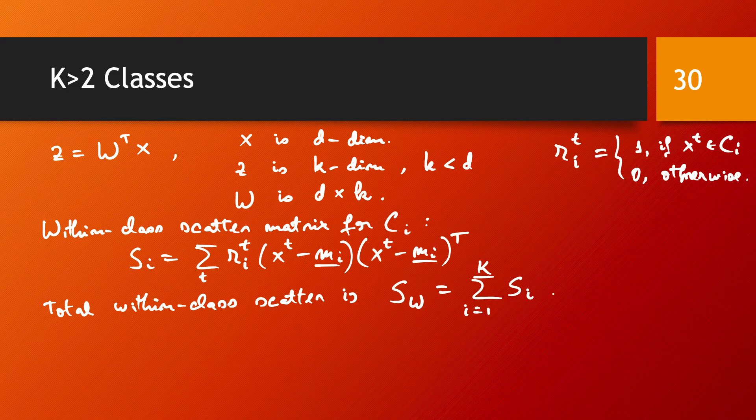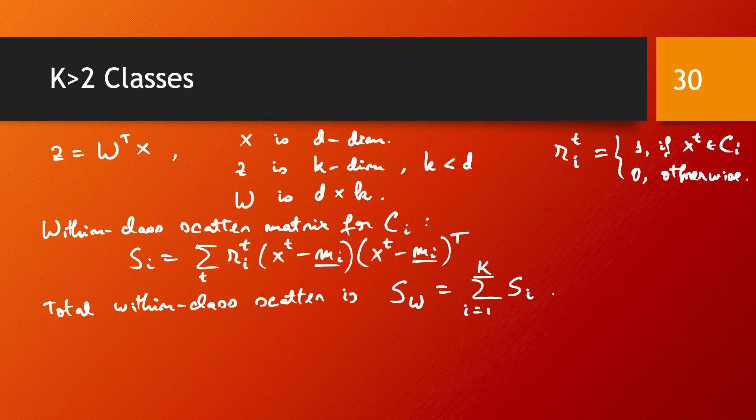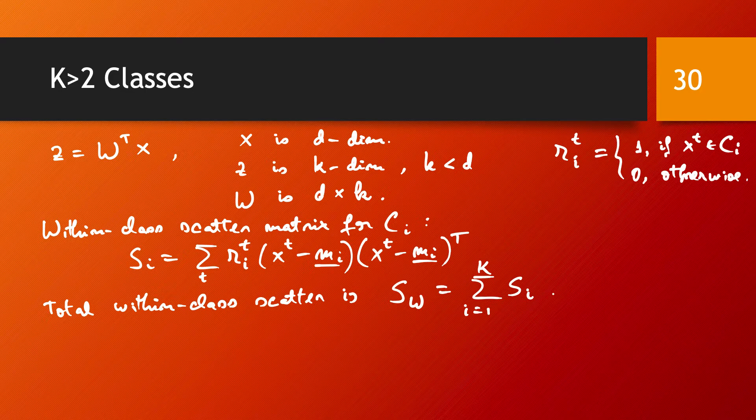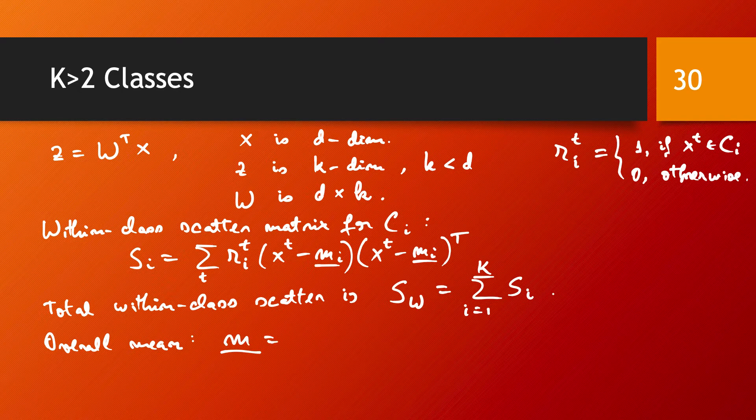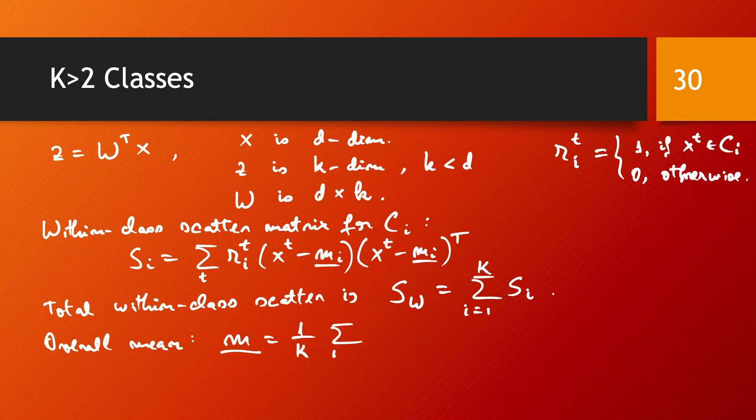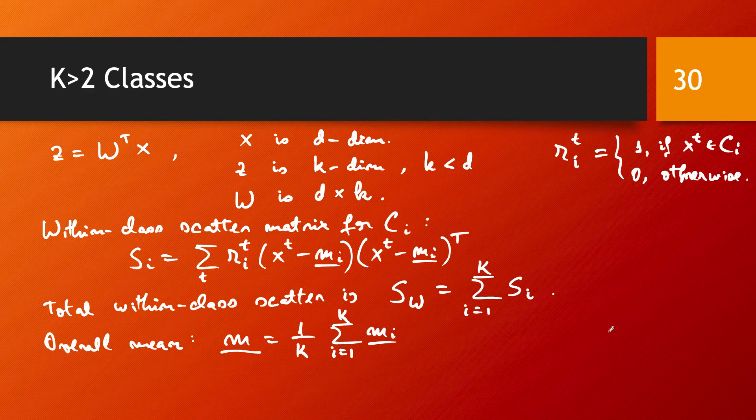And when we have more than two classes, the scatter of the means is calculated as how much they are scattered around the overall mean. So the overall mean, this is going to be M is just the average of all these class means.